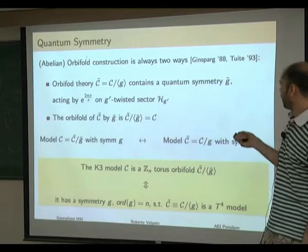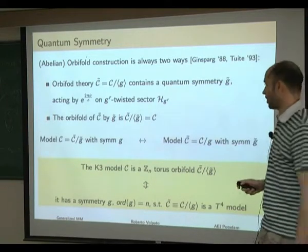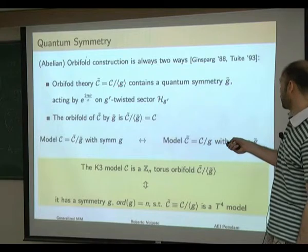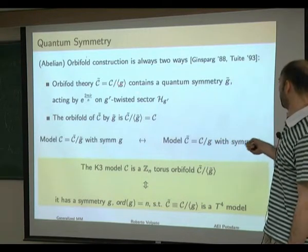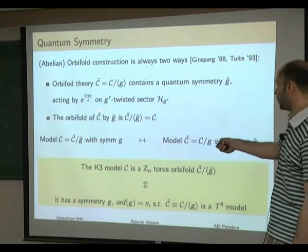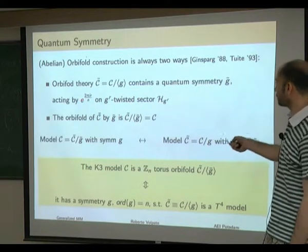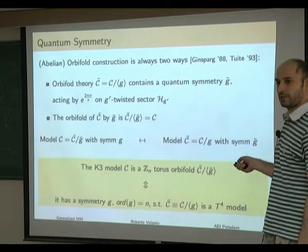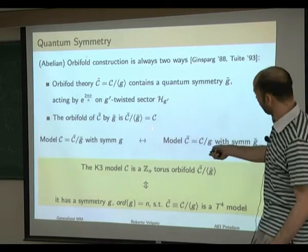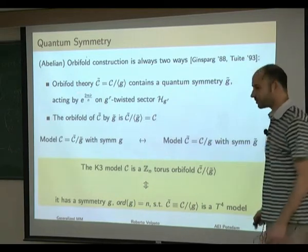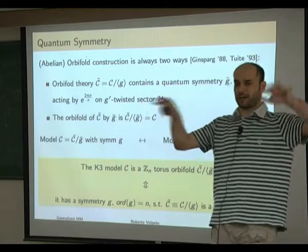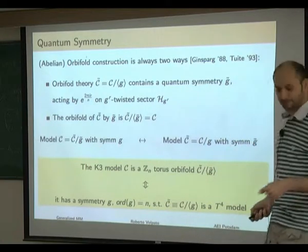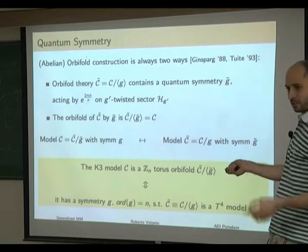One key fact is that the orbifold construction is two-way. If we have a consistent orbifold C-tilde by a symmetry of order N, the orbifold theory contains a quantum symmetry G-tilde which acts by phases — roots of unity — on the twisted sectors. Taking the orbifold of C-tilde by G-tilde brings us back to the original theory C. So the orbifold theory and the original theory are on the same level, and one can go back and forth between them by taking orbifolds.